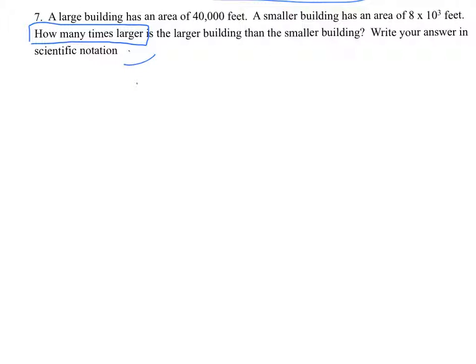So we're going to divide the 40,000 feet, because that's our larger building, by the smaller building, 8 times 10 to the third. First thing I want to do, write them both in scientific form. This is 4 times 10 to the fourth, over 8 times 10 to the third.